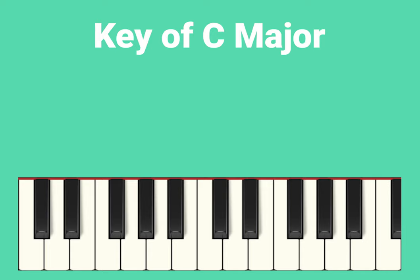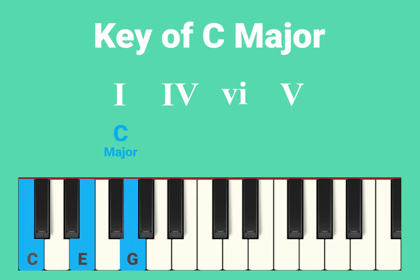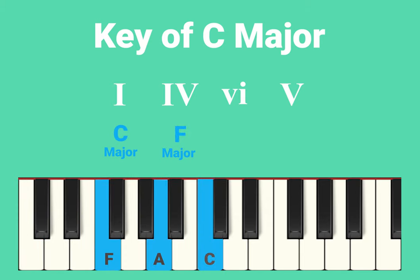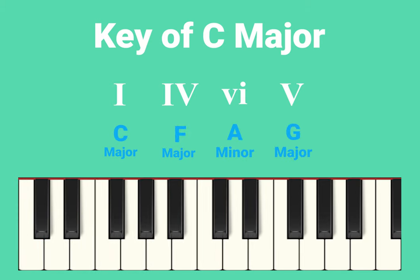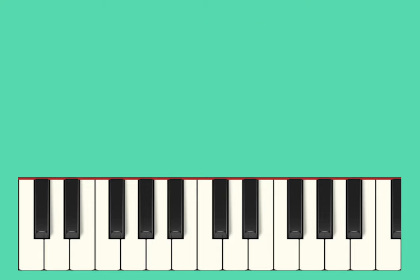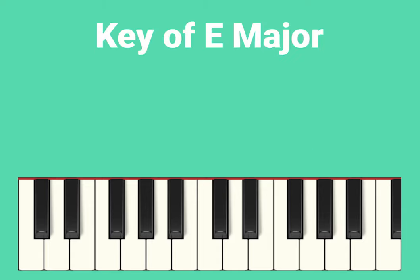Let's see how the Roman numeral system can be used in practice. Still using the key of C major, I'm going to use a standard chord progression of one, four, six, and five — that is the chords of C major, F major, A minor, and G major. Now let's change to the key of E major. Remember, we need to use the notes of the E major scale in order to number the chords correctly.